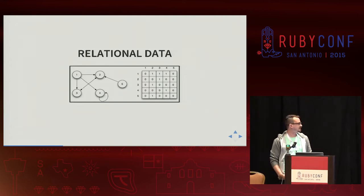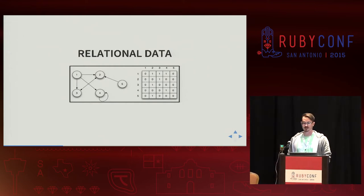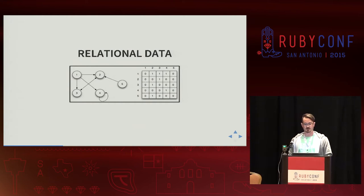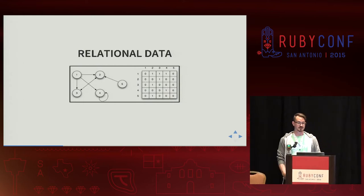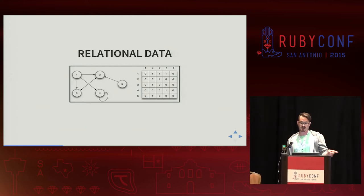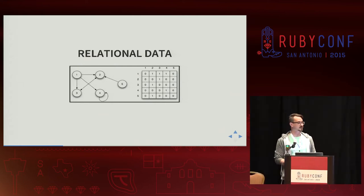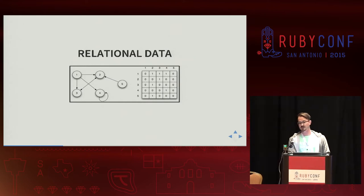We can also visualize or understand relational data in terms of matrices. This is a force-directed graph, and we care about this kind of stuff in things like social networking where we're trying to represent relationships between people. You have a node of one, and one has an edge corollary to four. You use the matrix like a map coordinate — if I wanted to look at four's relationships, I look at the column of four and see that four only has a self-referential relationship. Eventually you're going to store graph structures in some way in a matrix.